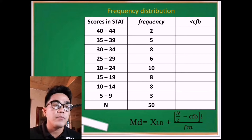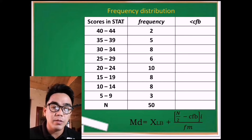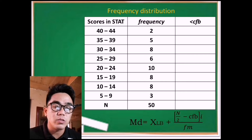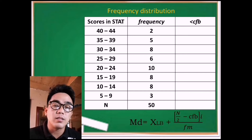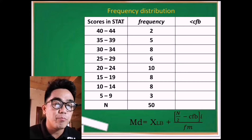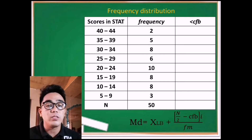The 'less than' symbol means the class limits or class intervals are arranged in descending order. If we use the 'greater than' symbol of cumulative frequency before the median class, the class limits or class intervals are arranged in ascending order. So how can we fill in properly each row of the less-than cumulative frequency before the median class, or CFB?